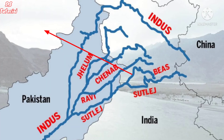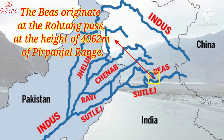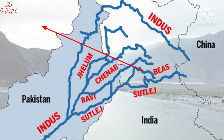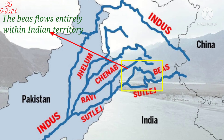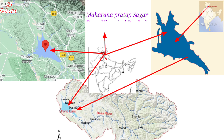The Beas is one of the major tributaries of the Indus river, known as Vipasha to ancient Indians. The Beas river originates near the Rohtang Pass at a height of 4,062 meters above sea level on the southern end of the Pirpanjal range, close to the source of the Ravi. It is a comparatively small river, only 460 kilometers long. The Beas is the only one of the five major tributaries of the Indus river that lies entirely within Indian territory. It joins with the Satlej river. The Pong Dam was constructed on the Beas river in 1975 in Himachal Pradesh.